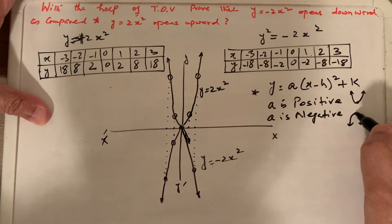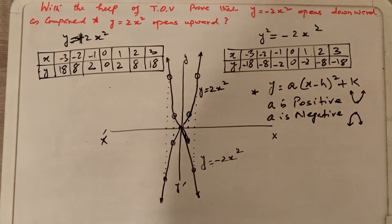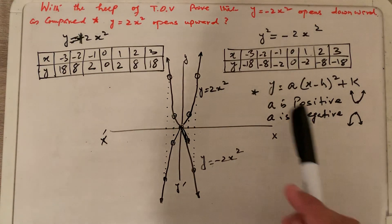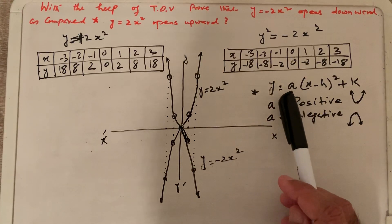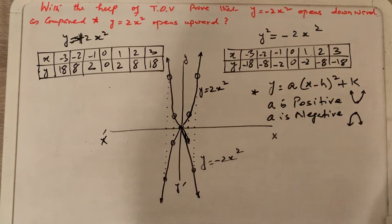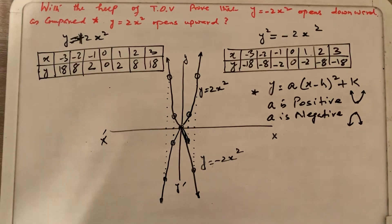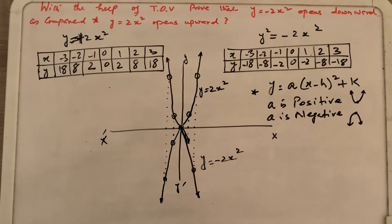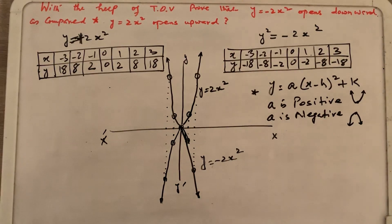We have checked what was given in the question using the table of values: y equals minus 2x squared opens downward and y equals 2x squared opens upward. The rule in vertex form is to check the value of a — if a is positive, the parabola opens up; if a is negative, it opens down. Please subscribe, press the bell icon, and email your questions to s_shaheed_ali@hotmail.com. Thank you for watching Learn Math with Sayyad Ali.